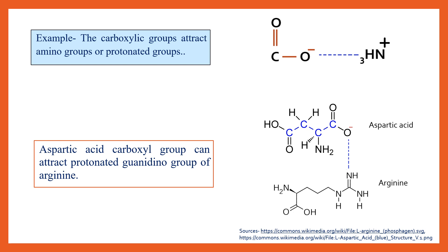Here is an example: aspartic acid, whose carboxyl group carries a negative charge, leads to the formation of an electrostatic interaction with the guanidino group of arginine. This indicates the formation of an electrostatic bond or electrostatic interaction between aspartic acid and arginine.